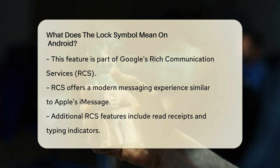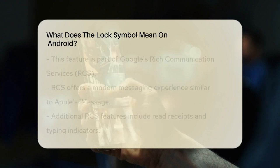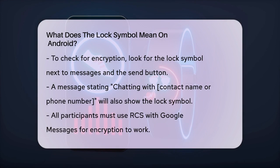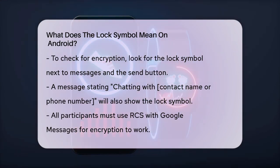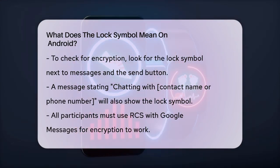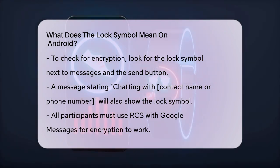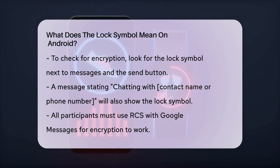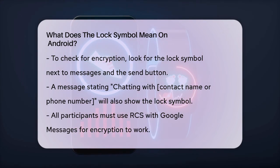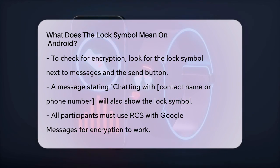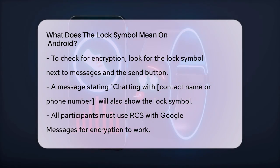To see if end-to-end encryption is enabled, look for the lock symbol attached to your encrypted texts and the Send button. You'll also see a message that says "Chatting with [contact name or phone number]" with a lock symbol next to it. This encryption only works if all parties in the conversation are using RCS with Google Messages. For extra security, these encrypted chats also have a shared verification code.